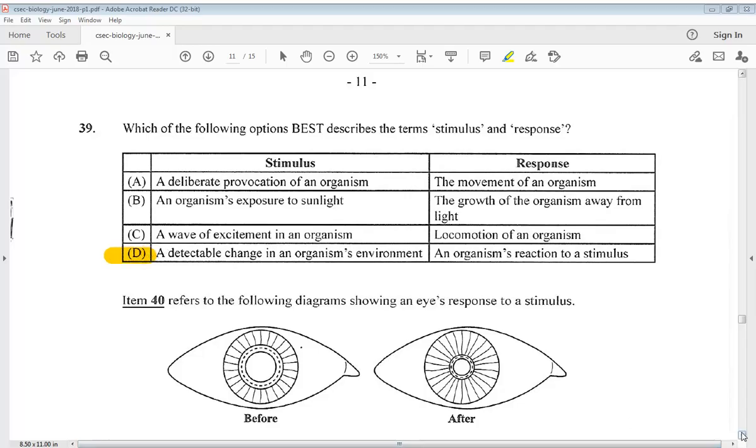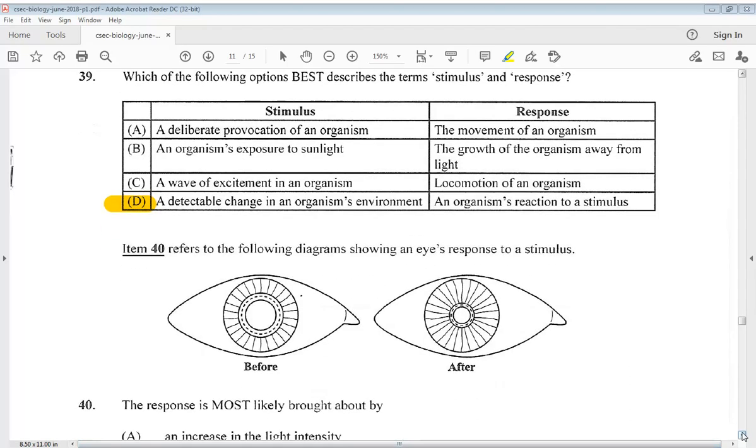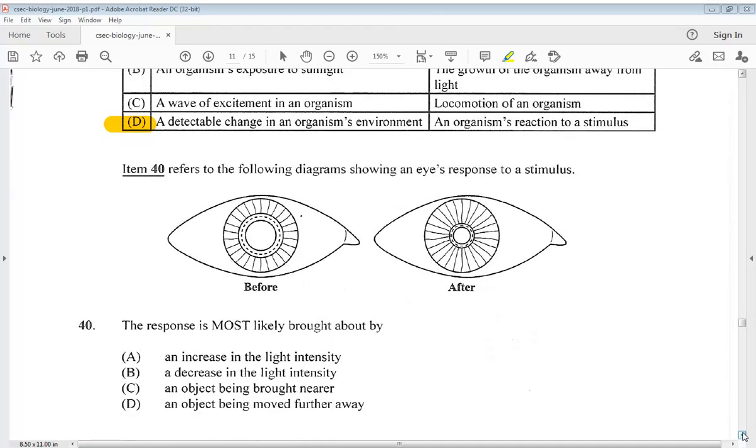Question 40 says item 40 refers to the following diagrams showing an eye's response to a stimulus and we have the before and after. The response is most likely brought about by: A. An increase in the light intensity. B. A decrease in the light intensity. C. An object being brought nearer. D. An object being moved further away. So it would be A, an increase in the light intensity.